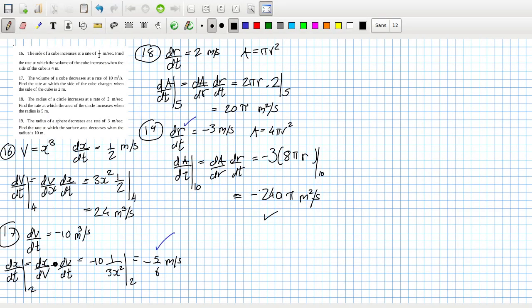Yeah, let's double check these. dr dt is 2, 2 pi r, yeah. And then here, 3x squared times a half, yeah, okay.